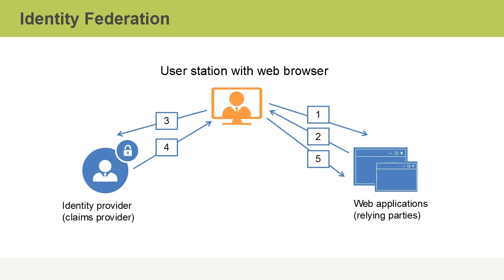Let's take a look at the communication flow with identity federation. Pictured in our diagram, in the center we've got a user station with a web browser. On the left we've got the identity provider, otherwise called the claims provider, and on the right we've got the web applications, which are otherwise called relying parties. In transmission number one, the user in their web browser attempts to connect to a web application. The web application is configured to trust the identity provider, so in transmission number two, the web application will send back a notification to the user, essentially redirecting them to the identity provider.